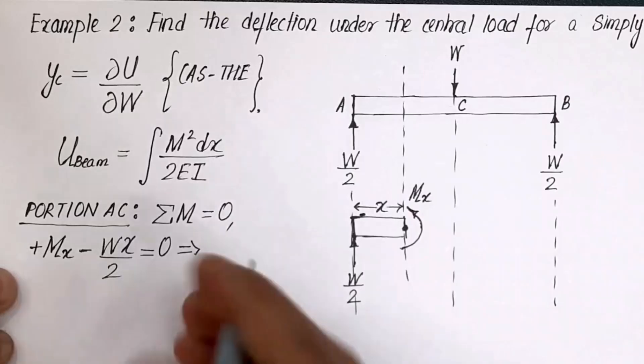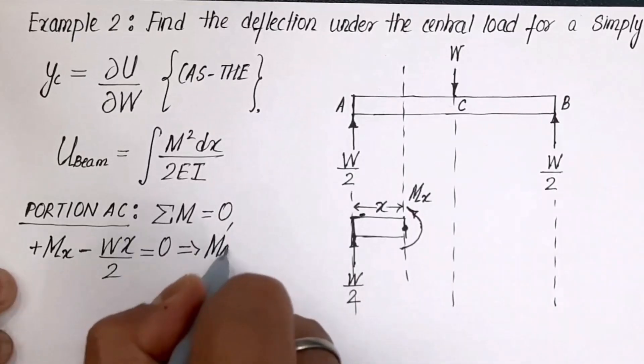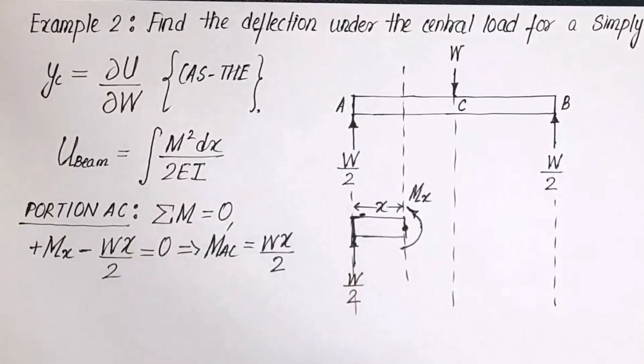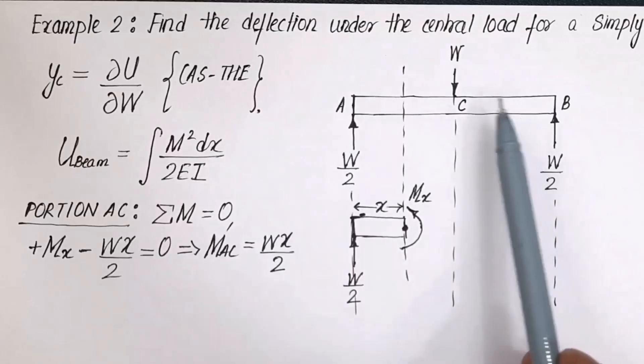So M_AC is equal to Wx over 2. That's the first thing. In the same fashion, students, what we can do is we can find the moment for any point between C and B. That can be done.